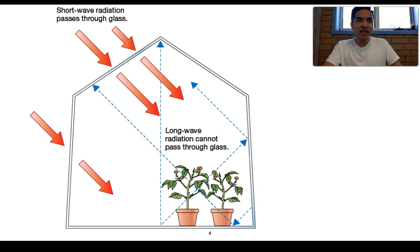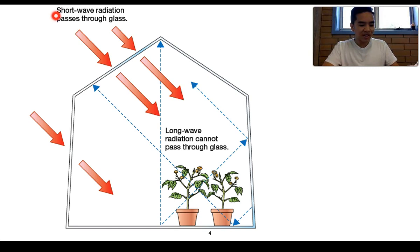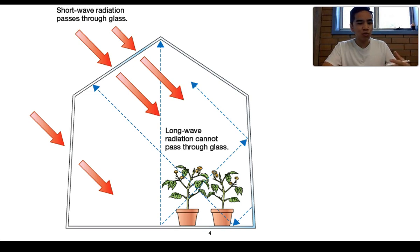So firstly, what is a greenhouse? Many of you are probably aware of what a greenhouse is. Imagine that this is a so-called greenhouse here — it's made up of a glass exterior. What happens is you can get sunlight, which is represented as short-wave or short-wavelength radiation, which can pass through the transparent glass. Once it passes through, some of that radiation gets absorbed by objects in the greenhouse, like this plant here.